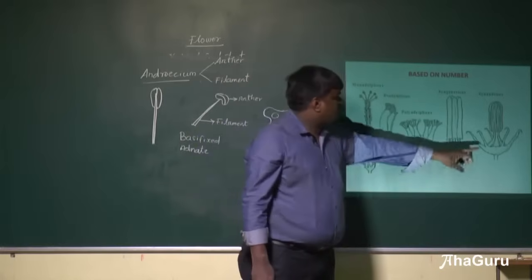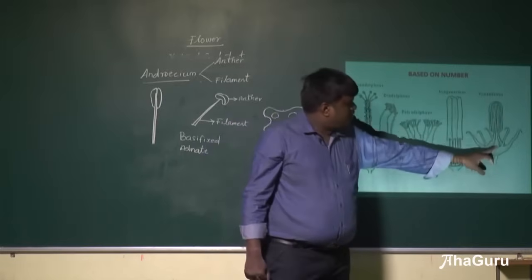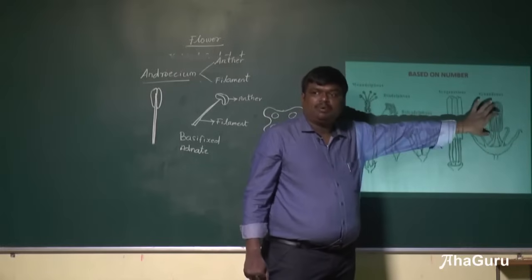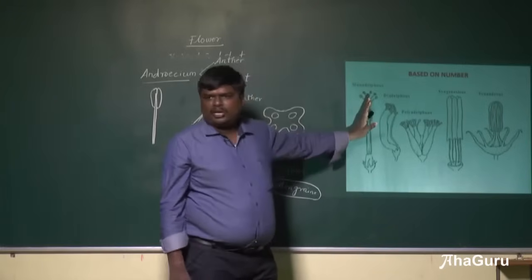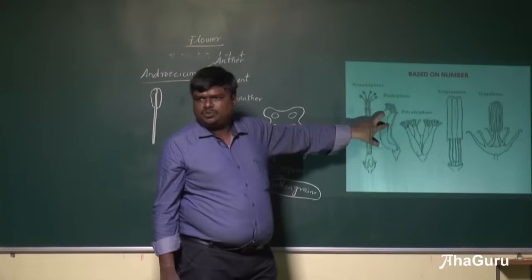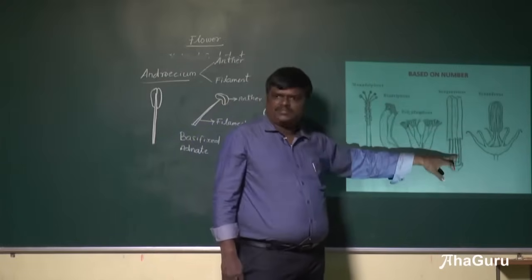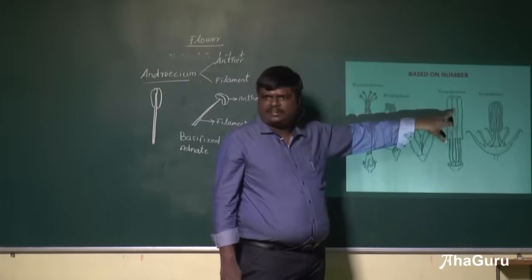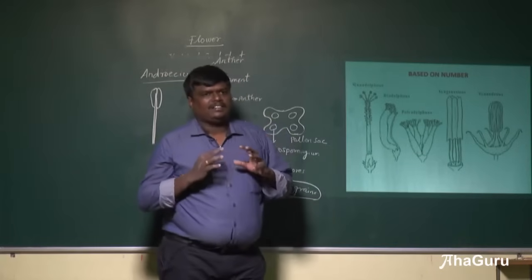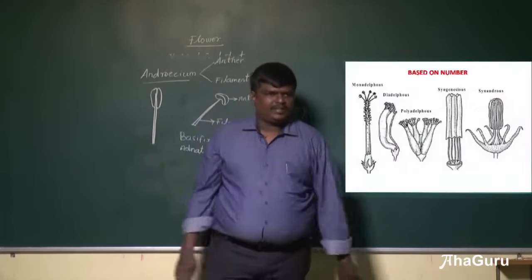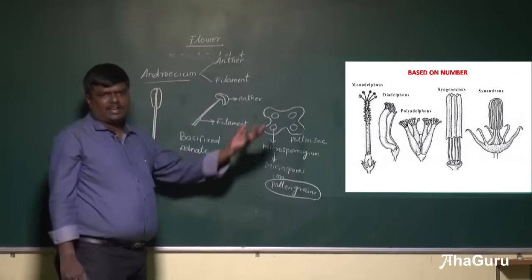The fourth type is synandrous, where both the filament and anther are joined together. To summarize: monadelphous is single bundle; diadelphous is two bundles; polyadelphous is many bundles; syngenesious has free filaments but united anthers; synandrous has both filament and anther joined together. These are the types of stamens.